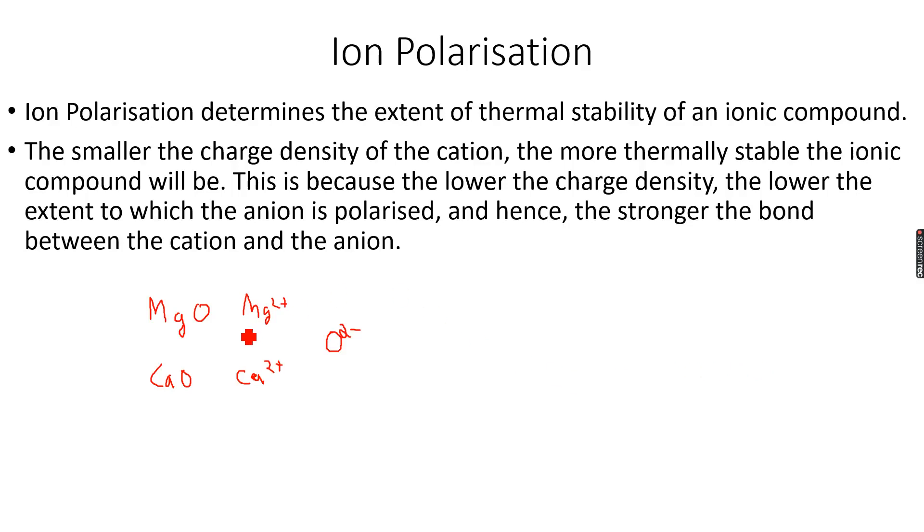Mg2+ ion will have greater charge density, and since it has greater charge density, it will polarize the anion more than the Ca2+ ion. If we have Mg2+ over here as the positive ion, I'm just writing plus to represent Mg2+, this will polarize the ion something like this.